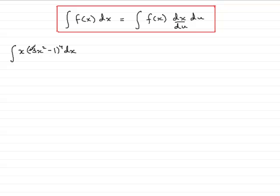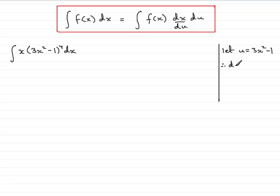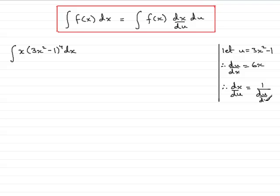We make a substitution. Normally, the bit in brackets is called u. So we'll let u equal 3x squared minus 1. And we need to find du/dx first. We differentiate this with respect to x, and we get du/dx is equal to 6x. We also require dx/du, and we know the result is 1 over du/dx. So we can see that dx/du is 1 over 6x.